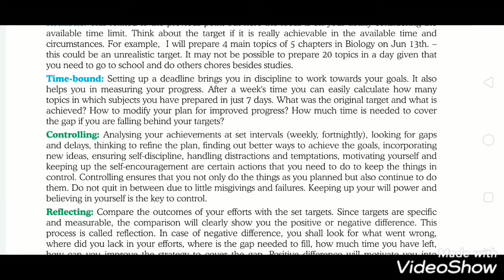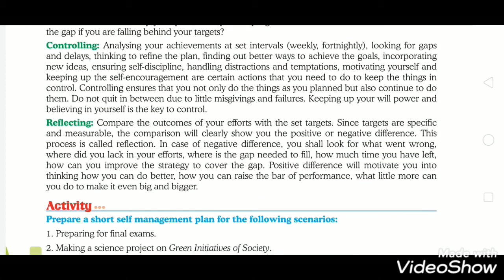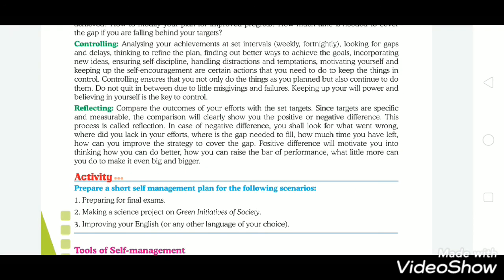The next and last point of the key elements of self-management is Reflecting. Reflecting means comparing the outcome of your efforts with the set targets. Since the target is specific and measurable, the comparison will clearly show you the positive or negative differences. This process is called Reflection. The rest of the topic will be discussed in the next video session. Thanks for watching.